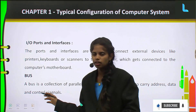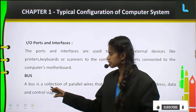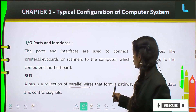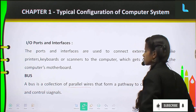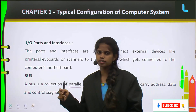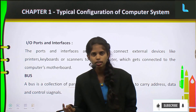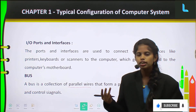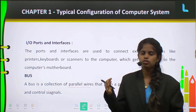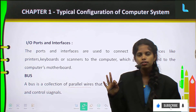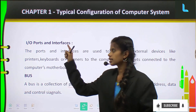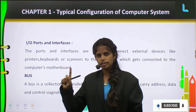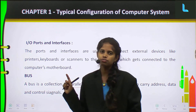Next you have the bus. A bus is a set of parallel wires that form a pathway to carry address, data, and control signals. In the computer, to carry data you have a data bus, to carry control signals you have a control bus, and to carry addresses you have an address bus. These three different types of buses are together called the system bus. These are the components of the motherboard, which covers the first question: what is a motherboard and explain its components.